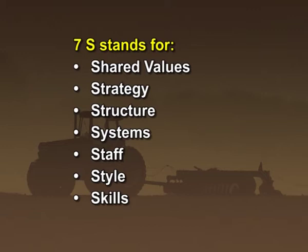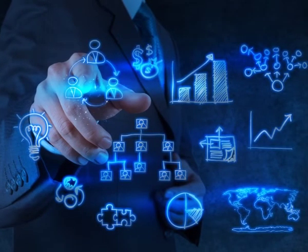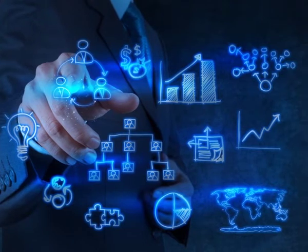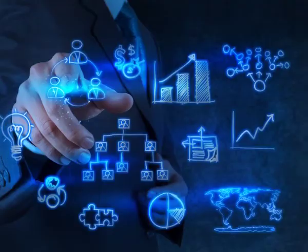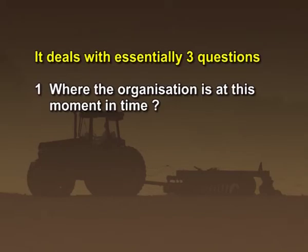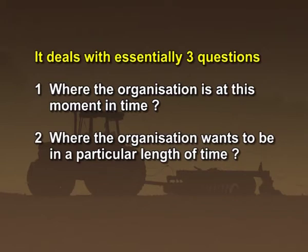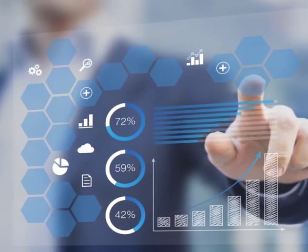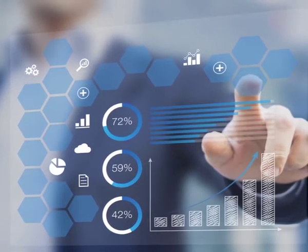Strategy is the plan of action an organization prepares in response to or anticipation of changes in its external environment. It is differentiated from tactics by being premeditated, well thought, thorough and often practically rehearsed. Strategy deals with three essential questions: where the organization is at this moment in time, where the organization wants to be in a particular length of time, and how to get there. Thus, strategy is designed to transform the firm from its present position to a new position described by objectives, subject to constraints of capabilities.